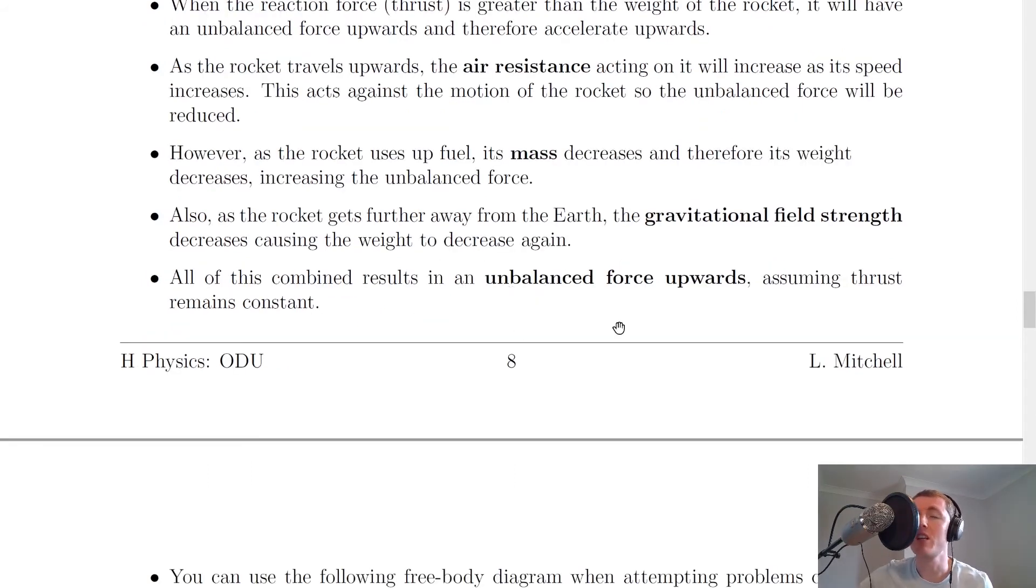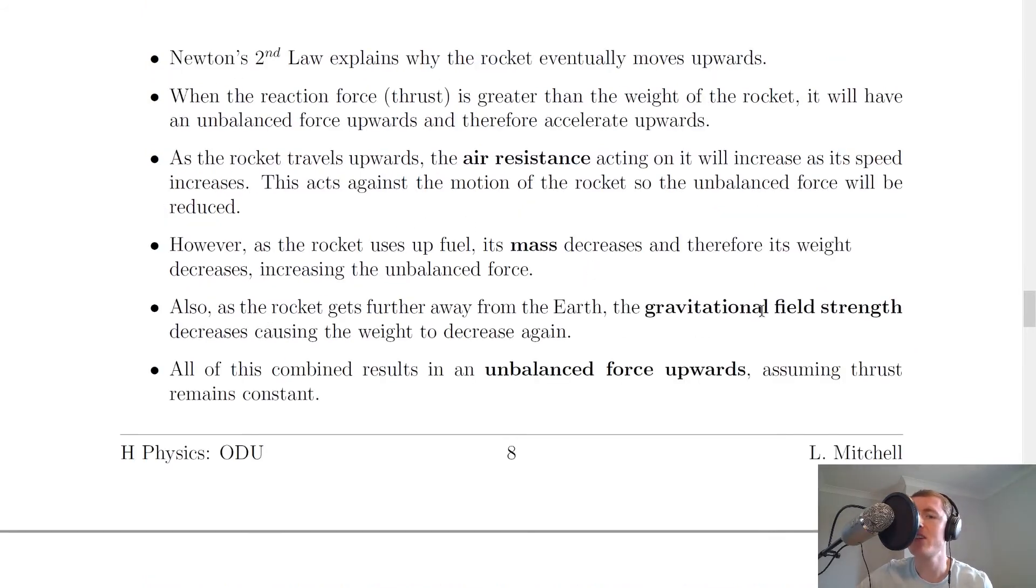So all of this combined results in an unbalanced force upwards, assuming the thrust of the rocket remains constant. So we've got the mass and the gravitational field strength contributing to an unbalanced force upwards, and we've got the air resistance acting on the rocket, causing the unbalanced force upwards to be reduced a bit. But it's not enough to cause the rocket to not go anywhere.